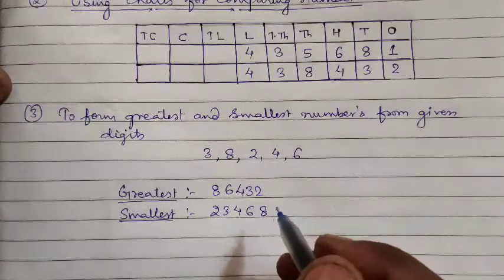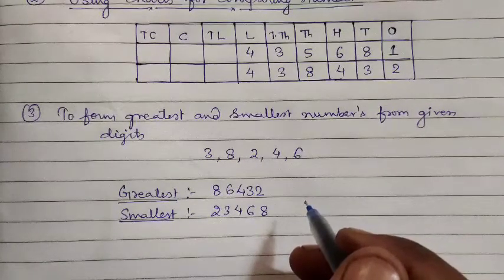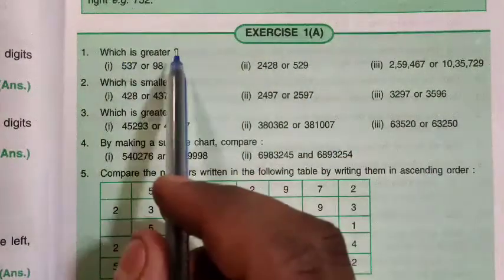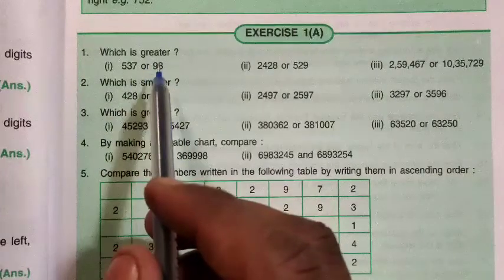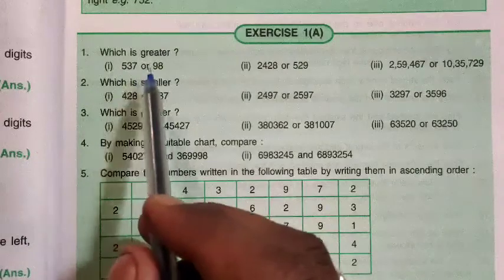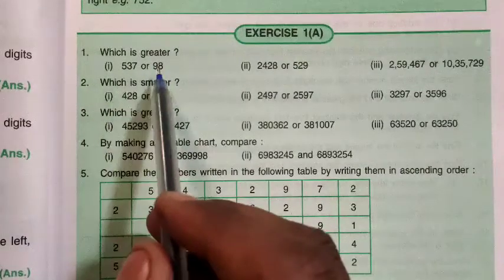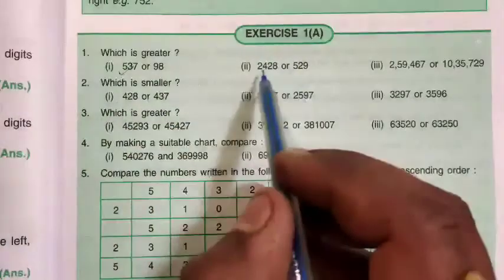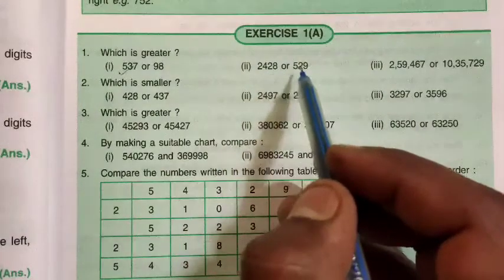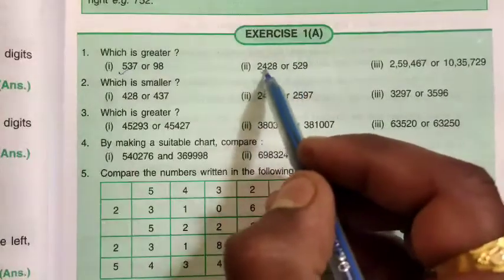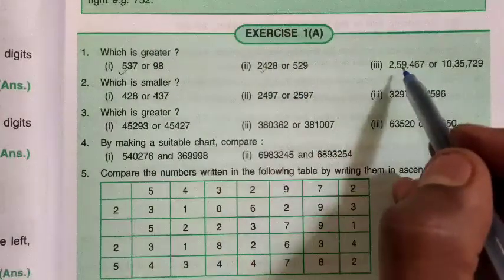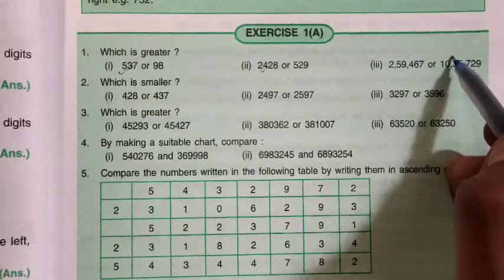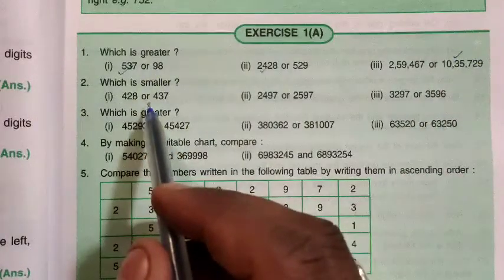Now we are in a position to start Exercise 1A. The first question asks which is greater. Whether 537 or 98 — since 537 is a 3-digit number and 98 is a 2-digit number, obviously 537 will be greater. Next, 2428 or 529 — 4-digit versus 3-digit, so 2428 is greater. Similarly for the next pair, the one with 7 digits will be greater than the one with 6 digits.